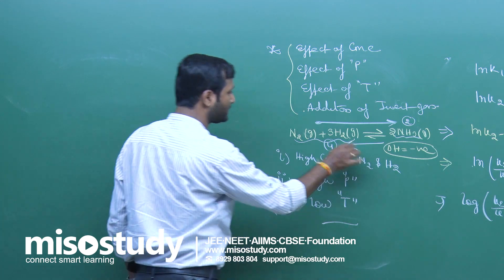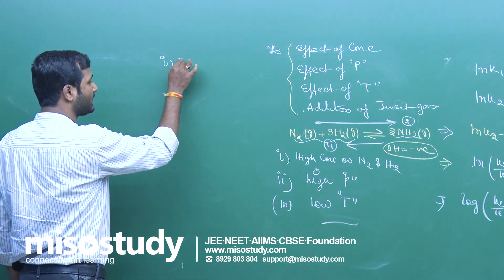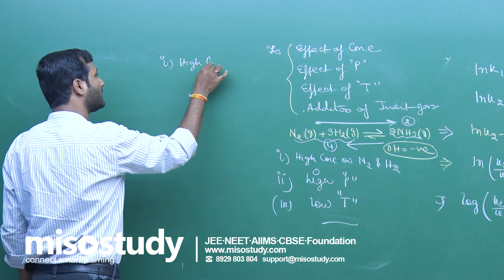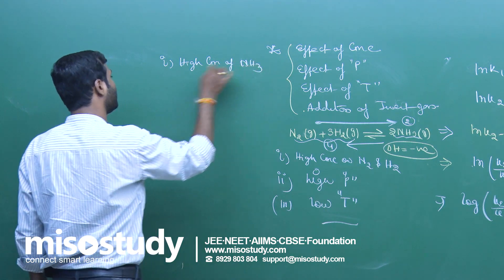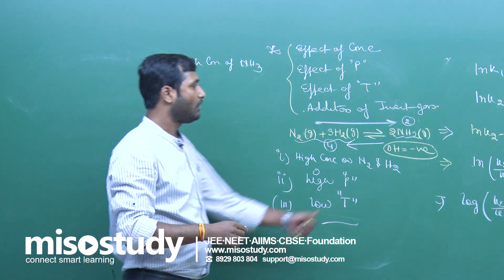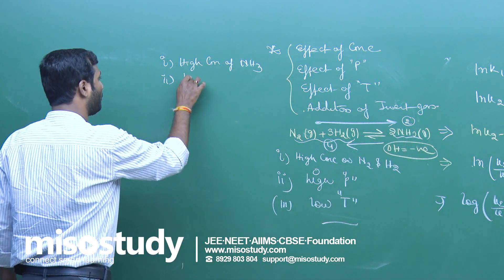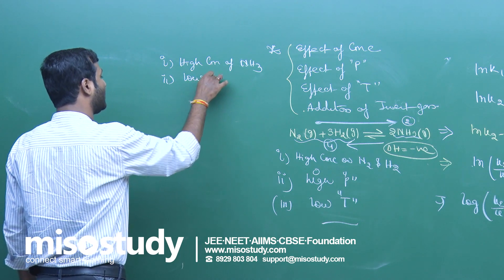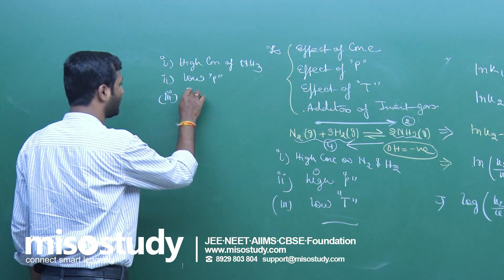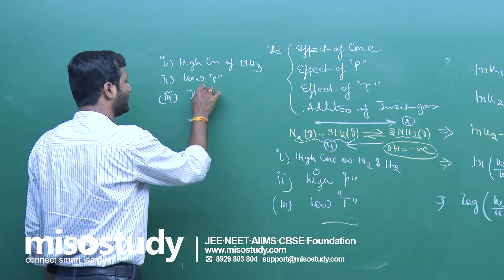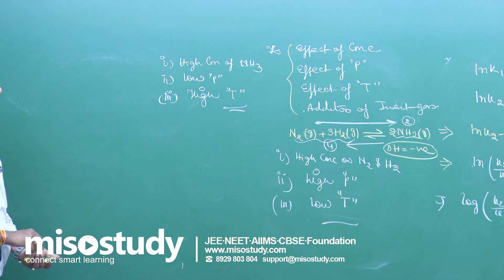For the decomposition of NH3, the favorable conditions are: high concentration of NH3, low pressure since we move from lower to higher number of moles, and since the forward process is exothermic, the reverse is endothermic — endothermic reactions favor high temperature.